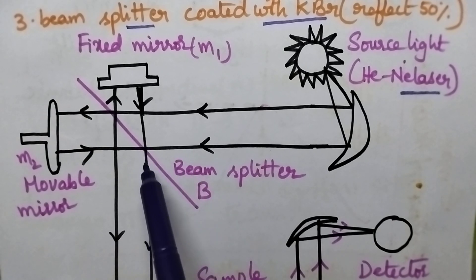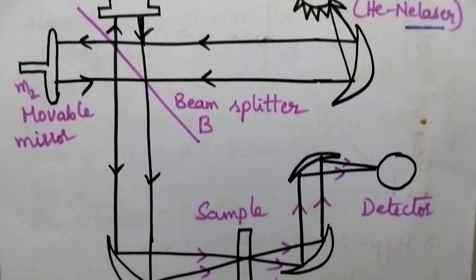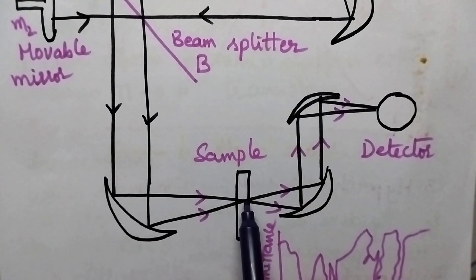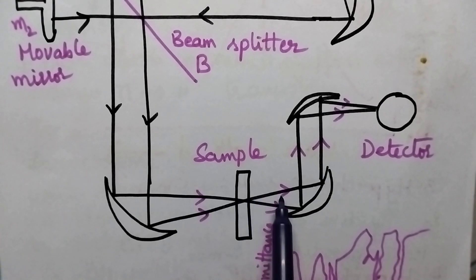Again, this radiation is passed through the sample. The sample will absorb the radiations characteristic of the functional groups, and the remaining radiation will be transmitted.